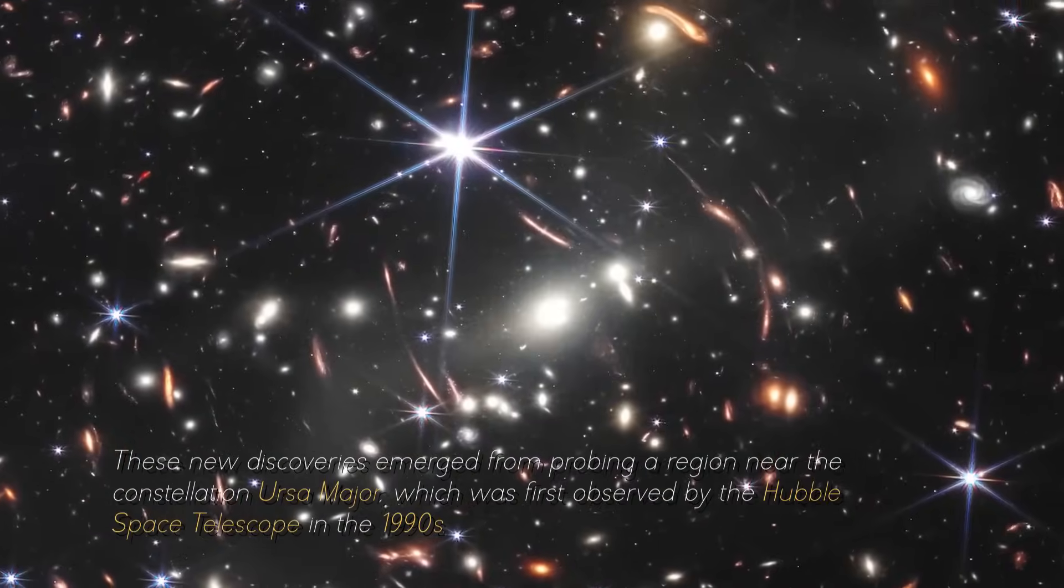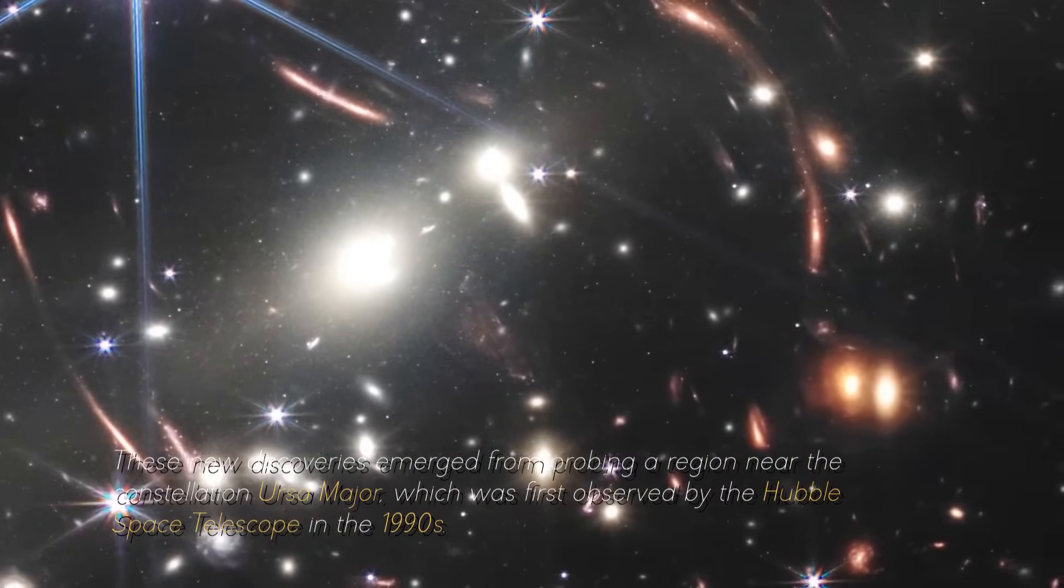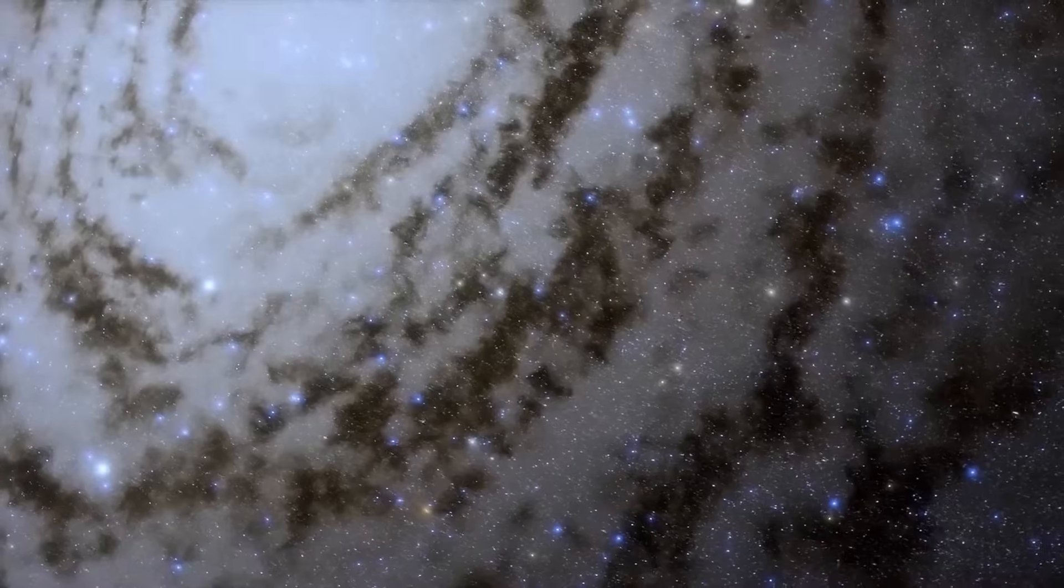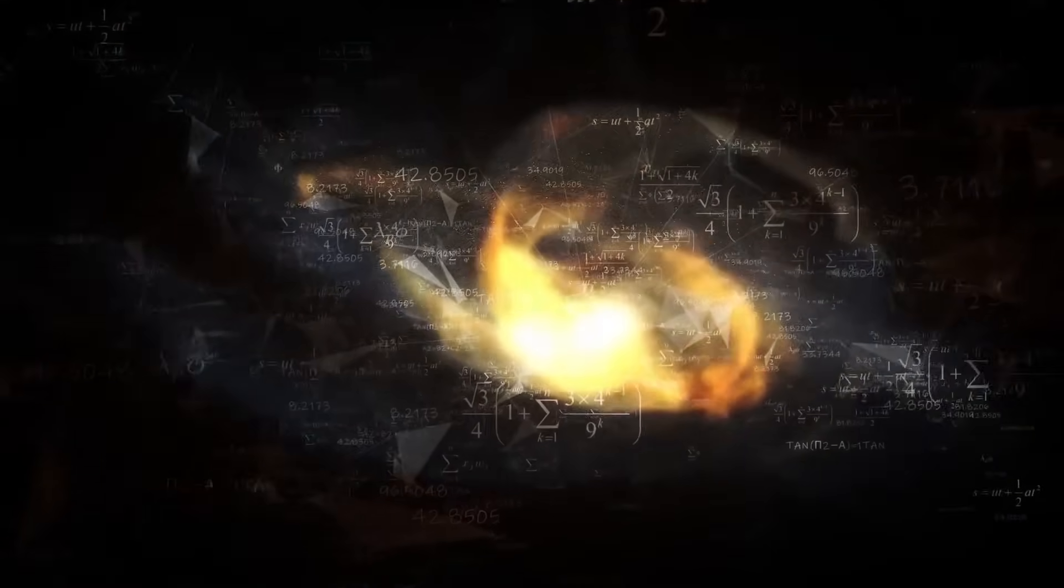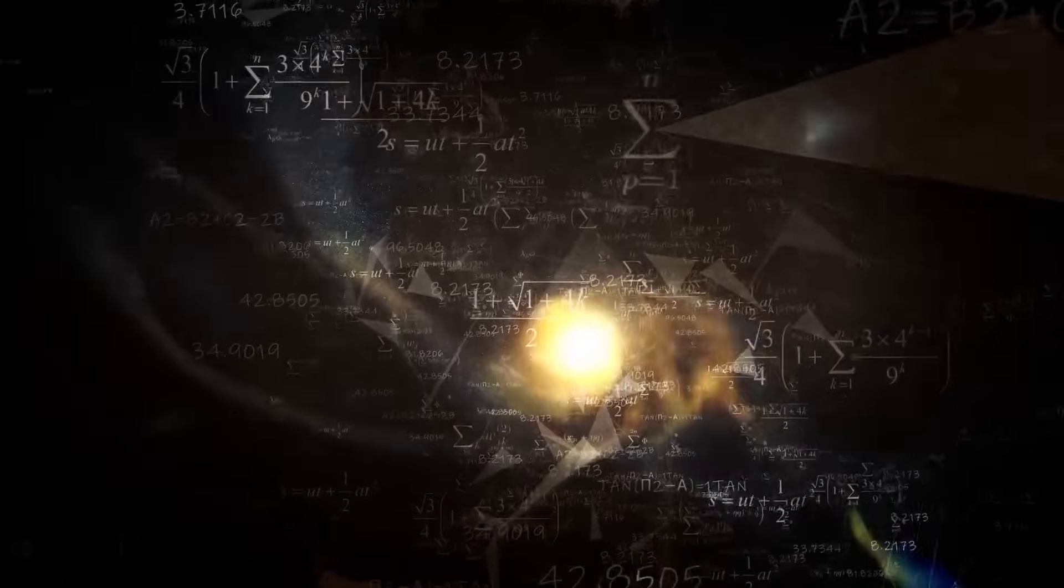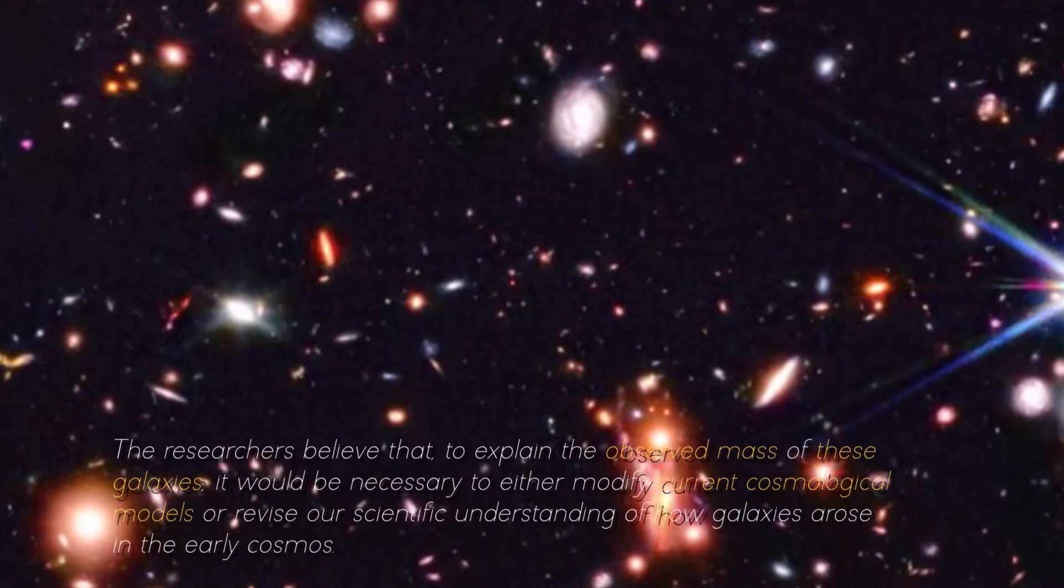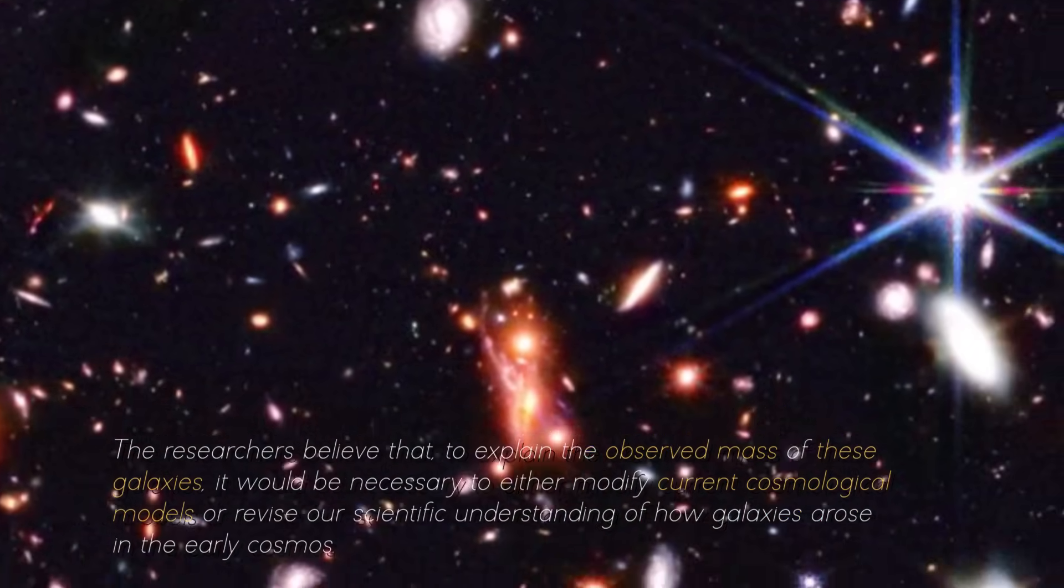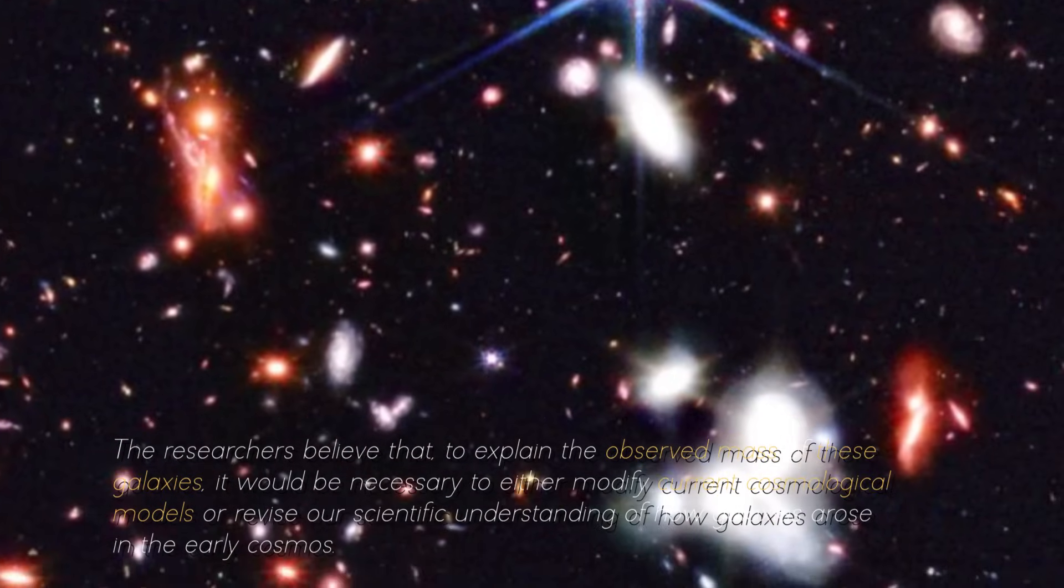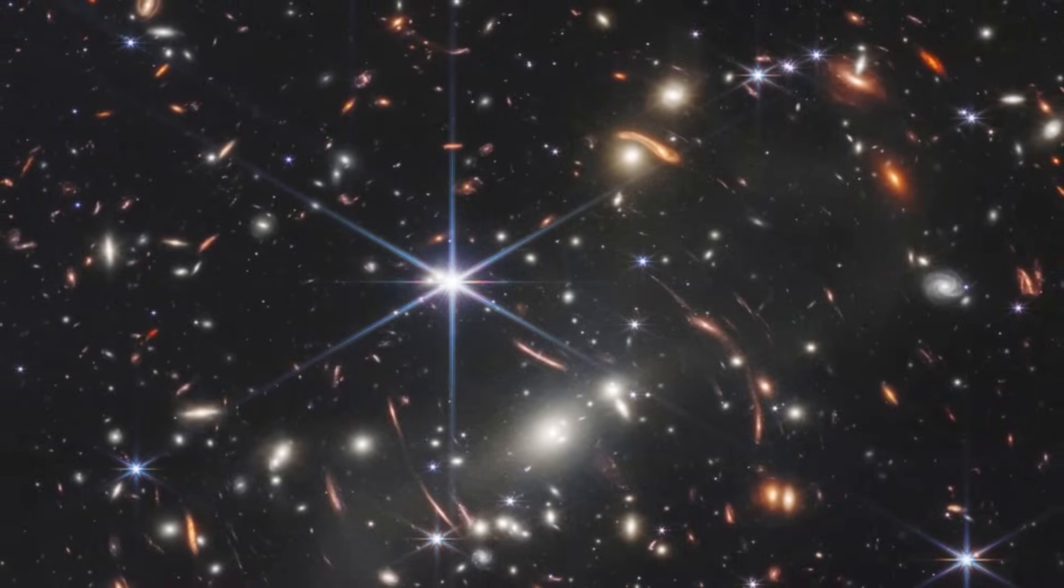These new discoveries emerged from probing a region near the constellation Ursa Major, which was first observed by the Hubble telescope in the 1990s. The candidate galaxies are so striking that they contradict 99% of current cosmological predictions. According to current calculations, there should not be enough material to form large stellar systems 500 to 700 million years after the Big Bang. The researchers believe that to explain the observed mass of these galaxies, it would be necessary to either modify current cosmological models or revise our scientific understanding of how galaxies arose in the early cosmos.